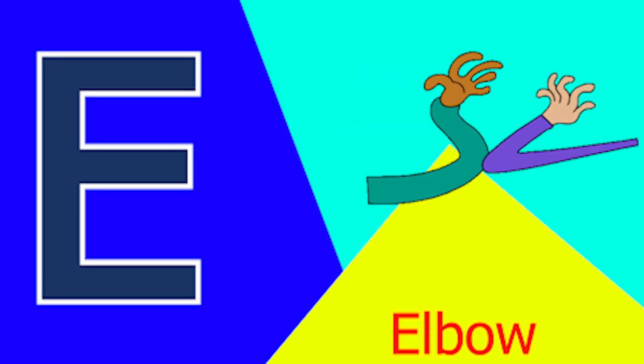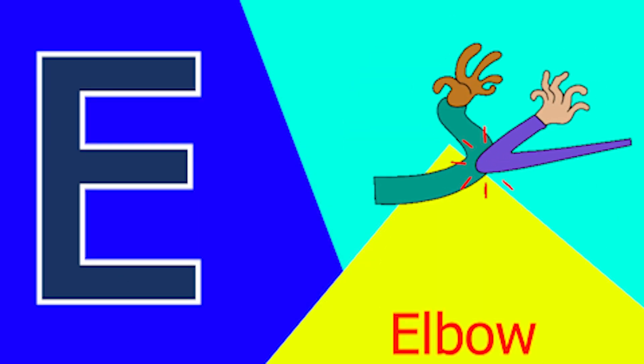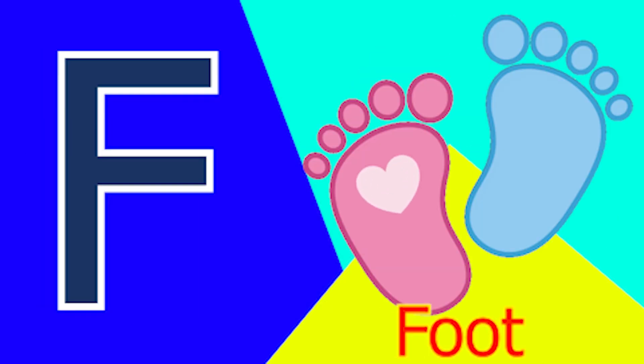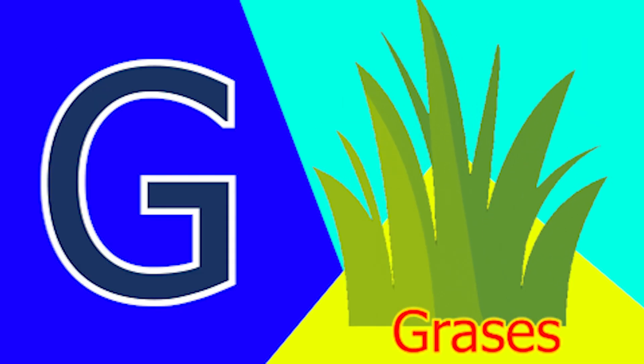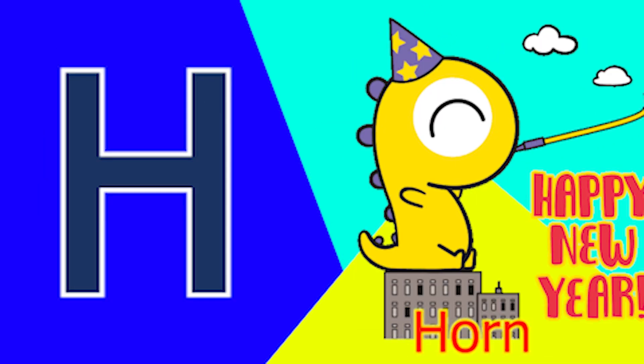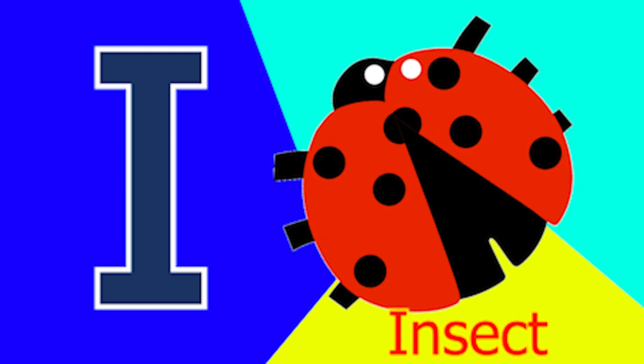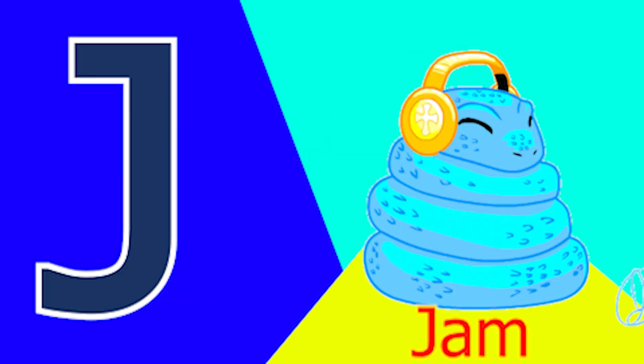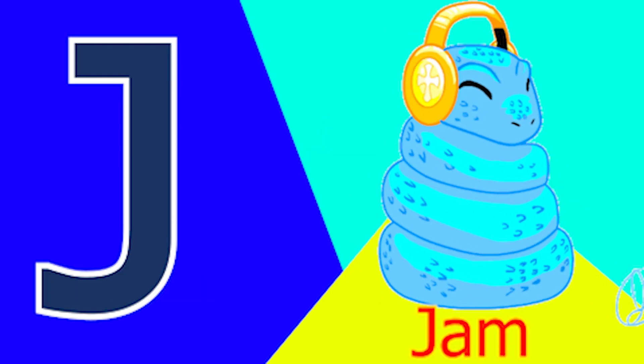E for elbow, F for foot, G for glass and H for horn. I for insect, J for jam.